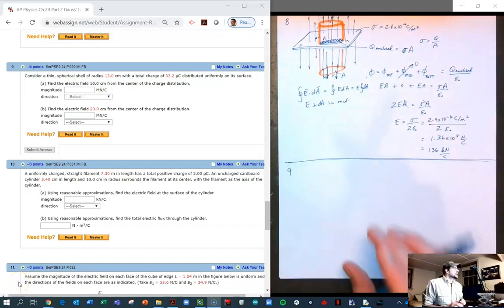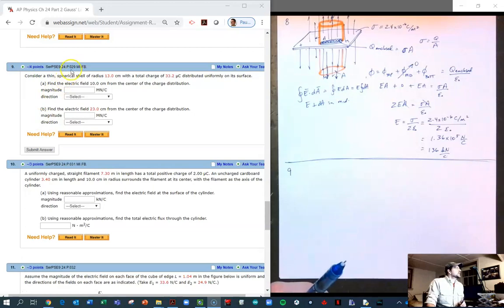This is problem number nine for my website, which is problem number 29.mi.fb in chapter 24 of Serway and Jewett's edition nine, physics for scientists and engineers textbook. We're looking at a thin spherical shell of a certain radius, mine happens to be 13 centimeters, with a total charge distribution on its surface.